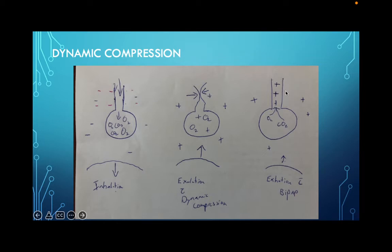Similar to how we use CPAP in obstructive sleep apnea to prevent tissues from closing airways, we can use CPAP in COPD patients to increase pressure in the airways, allowing oxygen in and CO2 out. Patients do this on their own - you'll see a COPD patient in casualty pursed-lip breathing. Try it now: purse your lips and breathe out. Do you feel that pressure? The patient is creating their own back pressure to help get all the air out.